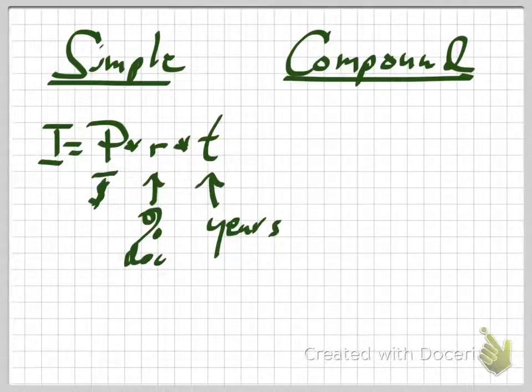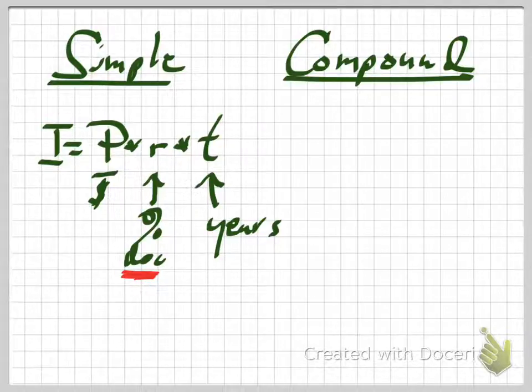For simple interest, you compute the interest by taking the principal — which is the amount of money you put in the bank — times the interest rate, which is a percent that you convert into a decimal, times the number of years.